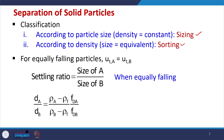If two particles settle at the same terminal velocity — u_tA equals u_tB — there may be a difference in density or diameter, but they settle at the same rate. Under this equal-falling condition, the settling ratio is defined as the diameter of particle A divided by diameter of particle B. Further, d_A by d_B can be given by an equation involving both the density difference and the frictional factors of particles A and B, which both become very important.